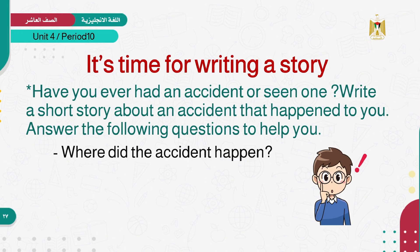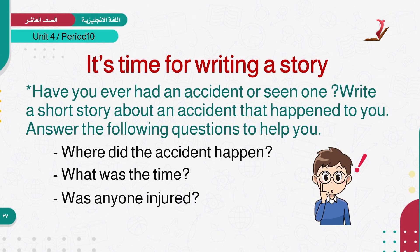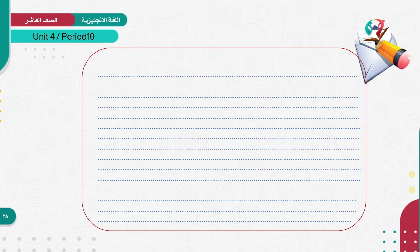What are these questions? The first one: where did the accident happen? We said location is required. What was the time — when exactly, whether a specific time, day, or year? Was anyone injured? And what was your feeling when the accident happened? By answering these four questions, we can also add extra details about the accident.